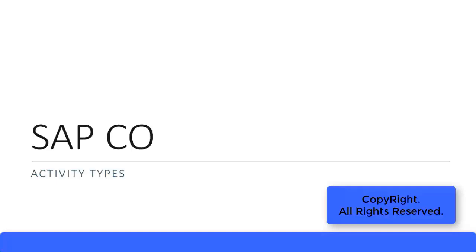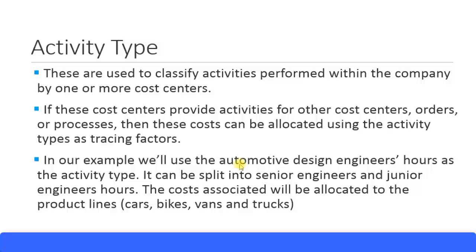Let's look at activity types in the CO module. Activity types are used to classify activities performed within the company by one or more cost centers. A cost center is performing an activity on behalf of the company, and most of the time the cost center is performing this activity on behalf of another cost center. Some cost centers will do the work on behalf of other cost centers, so we need to use activity types to trace this work.